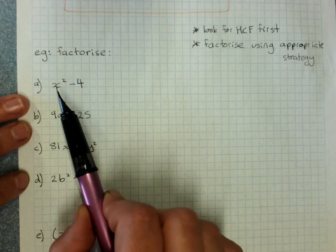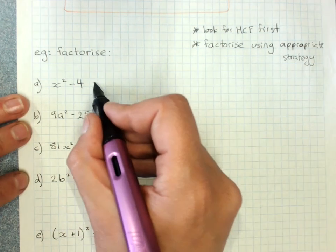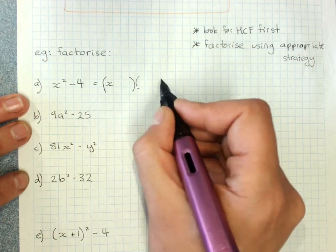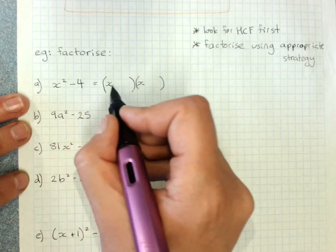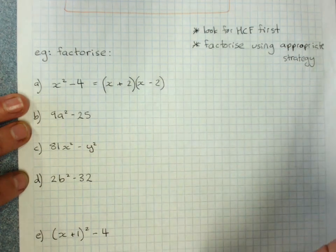Recognize that it's a difference of perfect squares. x squared, x times x, 4, 2 times 2. Apply the rule. Write your brackets. The square root of the first term, the square root of the second term, plus and minus.